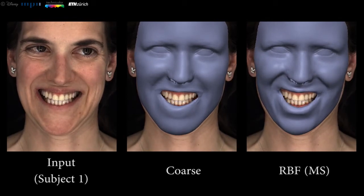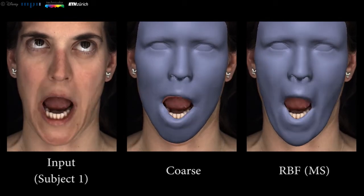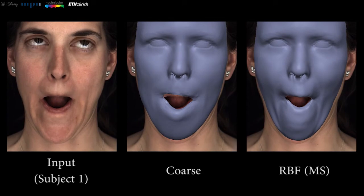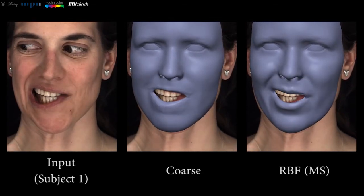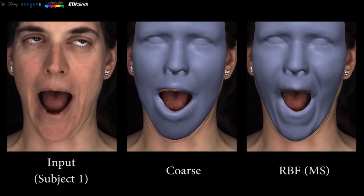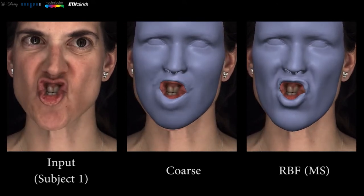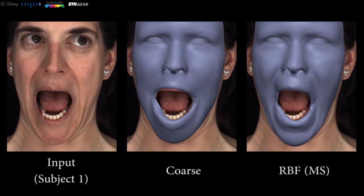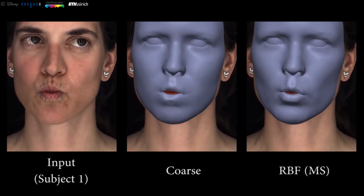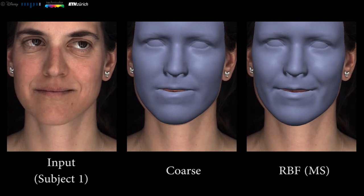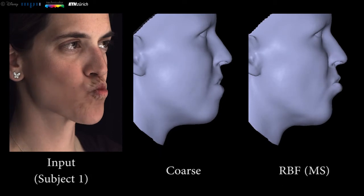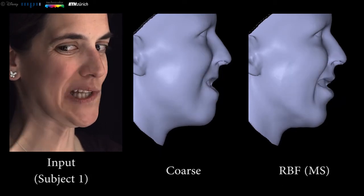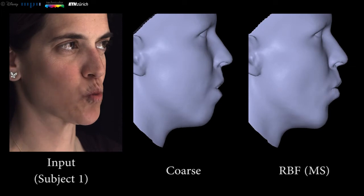In the following, we show results. This sequence was captured in the controlled multi-view setup. Note, we only use one of the frontal camera views for tracking. We use the multiple subject regressor, which contains the identity of the subject, but note the sequence is not included in the training. Stretching, bending, and rolling of the lips are nicely recovered motions by our approach.